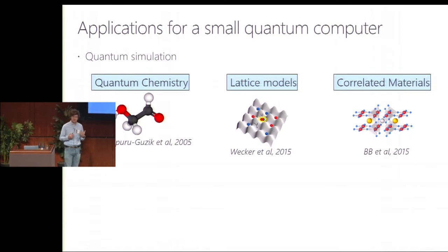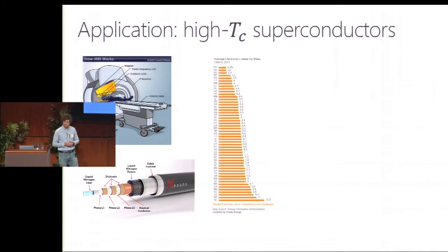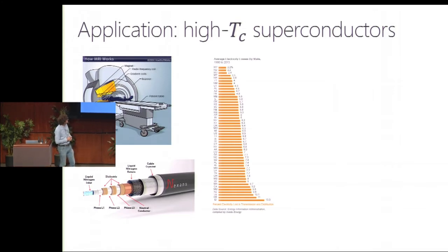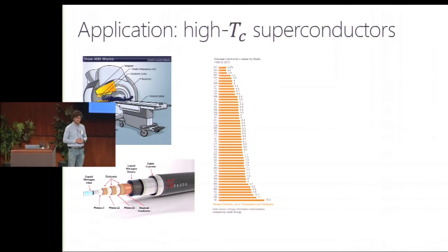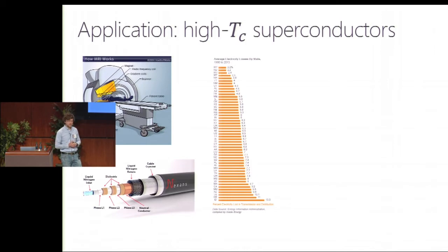To give you a flavor of the kind of problems we would like to be able to study, a typical one would be high-TC superconductivity, which is of course one of the oldest riddles of condensed matter theory. If you could solve this problem, it would have enormous economic impact. This is a plot of how much electricity is lost in power lines in different U.S. states. The average for all of the U.S. is around seven percent. If you could replace all these power lines by superconducting power lines, you could immediately save a sizable chunk of the energy costs in the U.S.